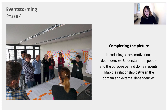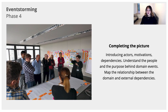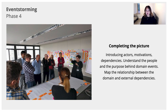For the fourth phase, it is about completing the overall picture. Completing the picture means including different actors, motivations, and dependencies — understanding the people and purpose behind the different domain events. This is about mapping the relationships between the domain and external dependencies.